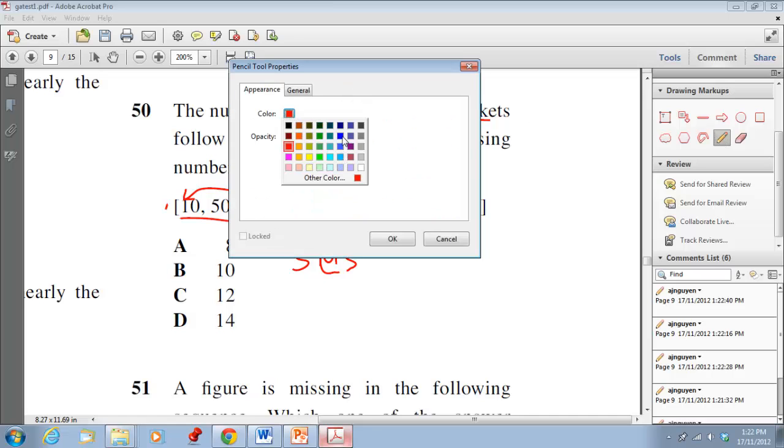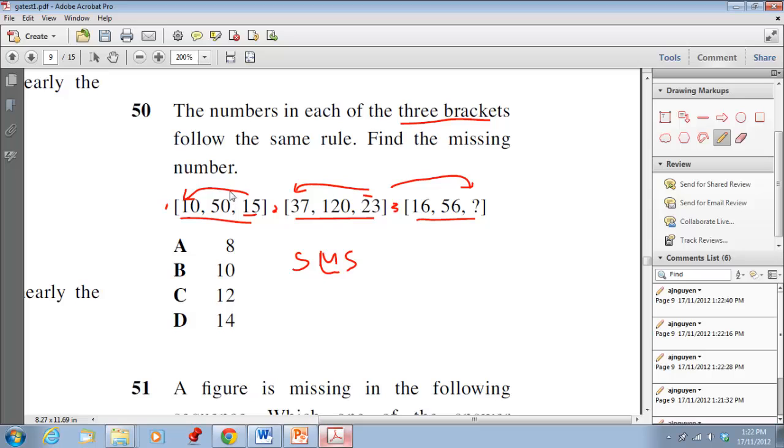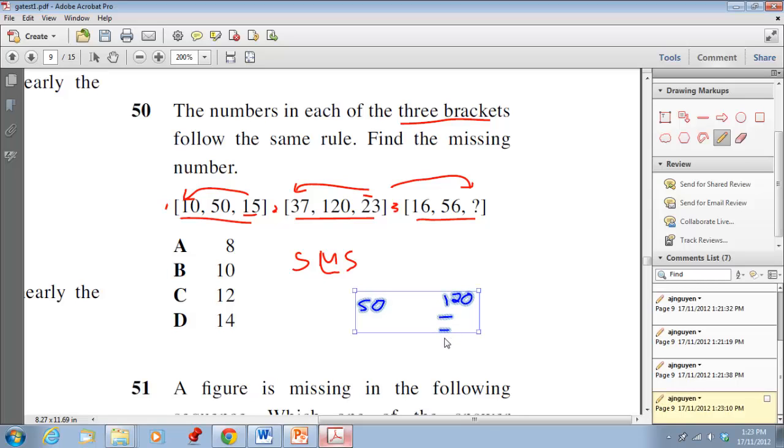So I'll change my pen color here just to show you. Here I see that 50 is a large number, so is 120, so therefore they must minus or divide the first number. Okay, so either/or and/or a combination of the two should apply.